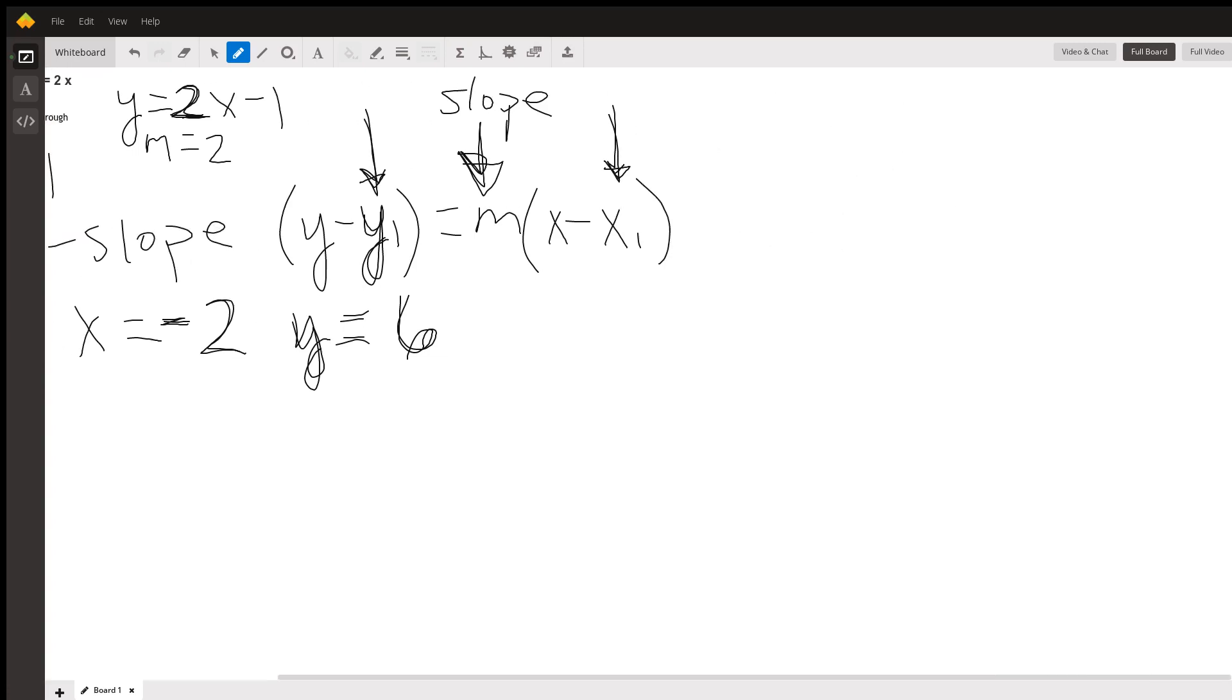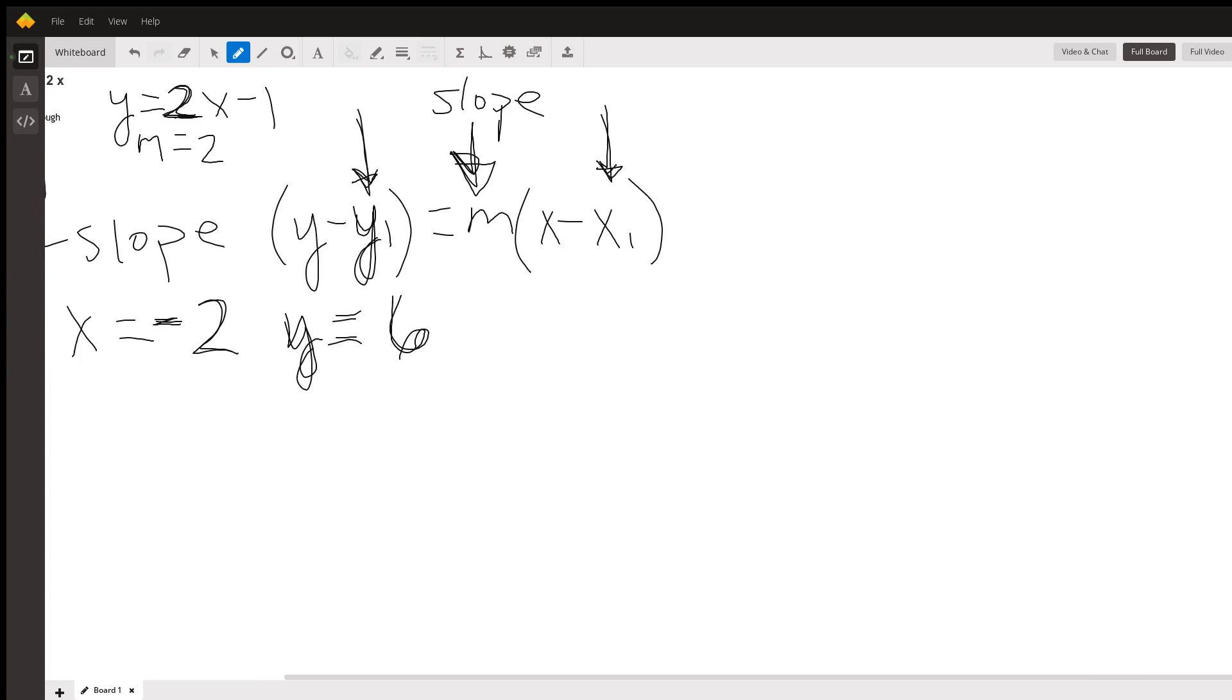So we're going to substitute all of these values into the slope formula: y minus y₁, which is y minus 6, equals m—we said the perpendicular slope is going to be negative one-half—times x minus x₁, and the x-coordinate that we're using is negative 2.